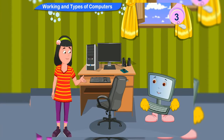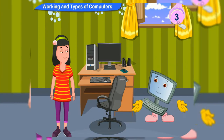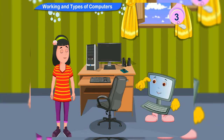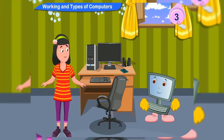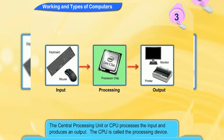What is output then? After processing the data, the computer displays the result. This result is called the output. Do you know that each and every part of the computer has a role in the IPO cycle? The keyboard and the mouse provide inputs to the computer, and so they are called input devices. The central processing unit, or CPU, processes the input and produces an output. The CPU is called the processing device.